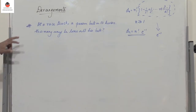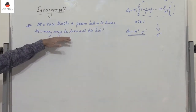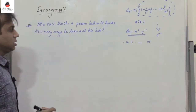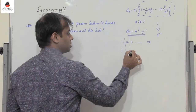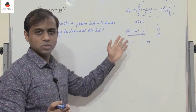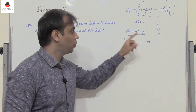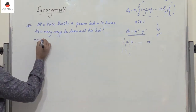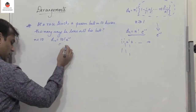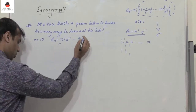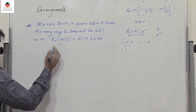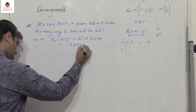Next example: at a race track, a person bets on 10 horses. How many ways does he lose all his bets? That means none of the horses finish in the position he predicted — so we need derangements for n equal to 10. D10 equals 10 factorial into e power minus 1, which is 10 factorial times 0.3679, approximately equal to 1,334,961 — approximately 1,335,035.